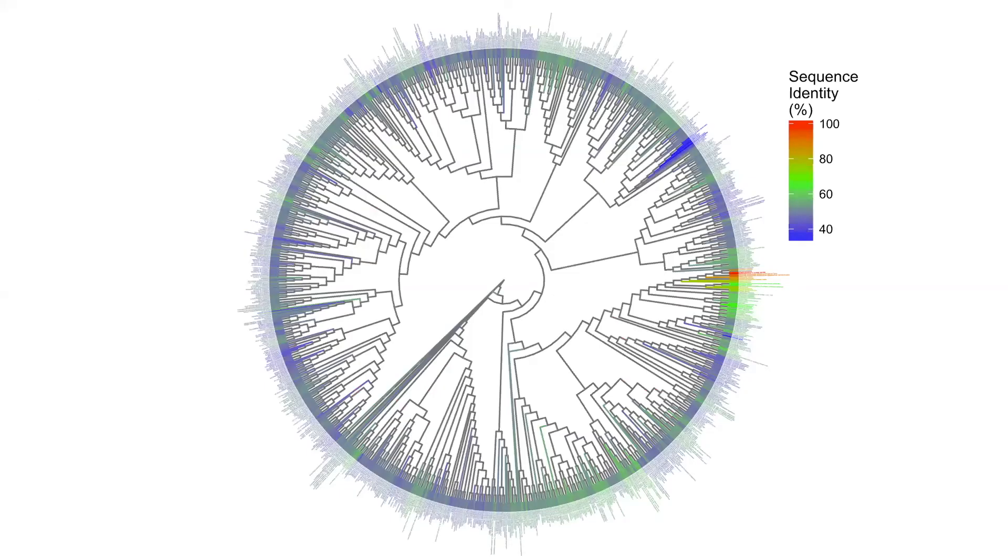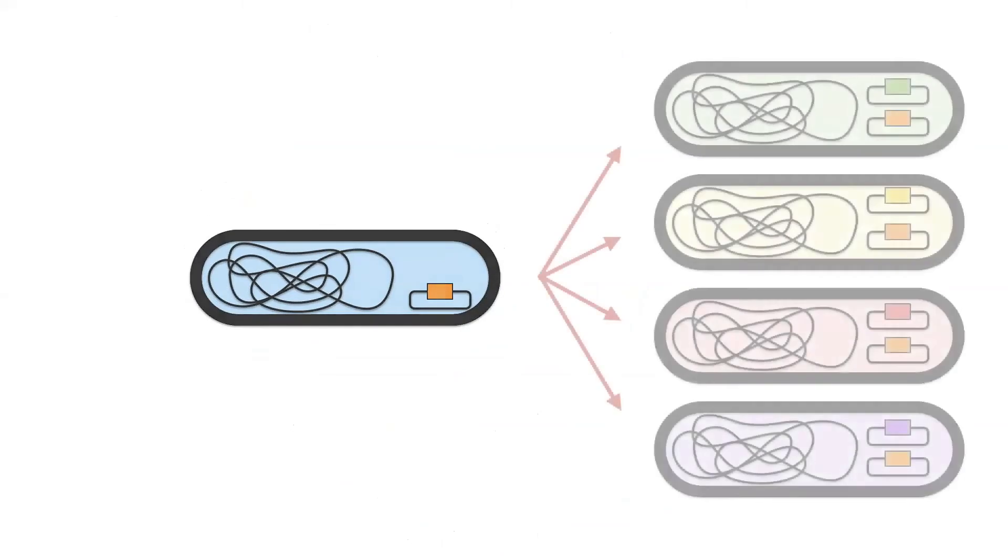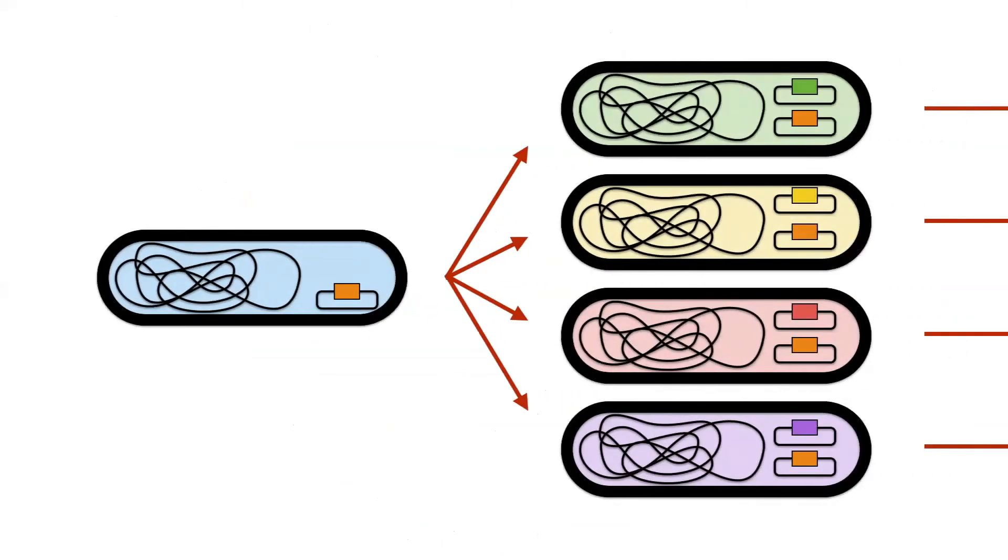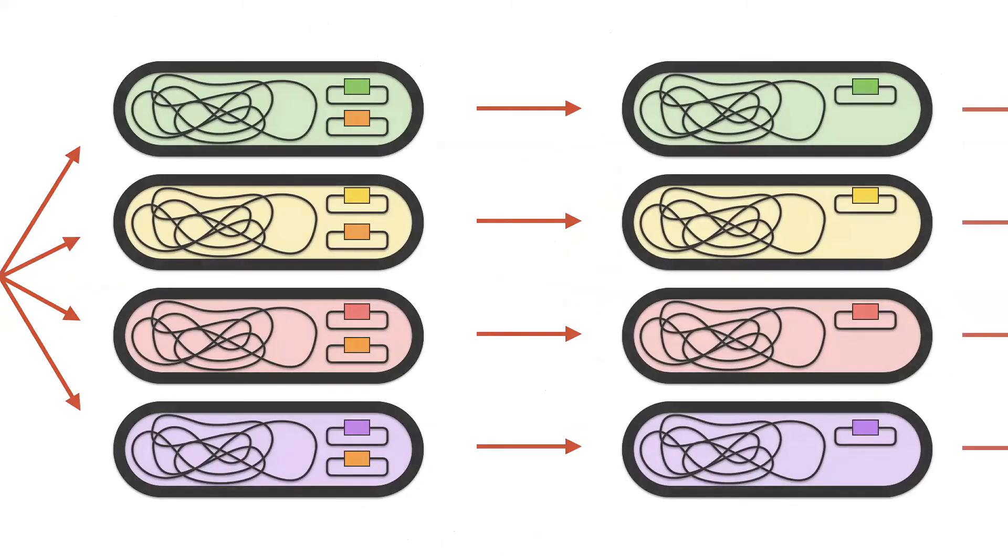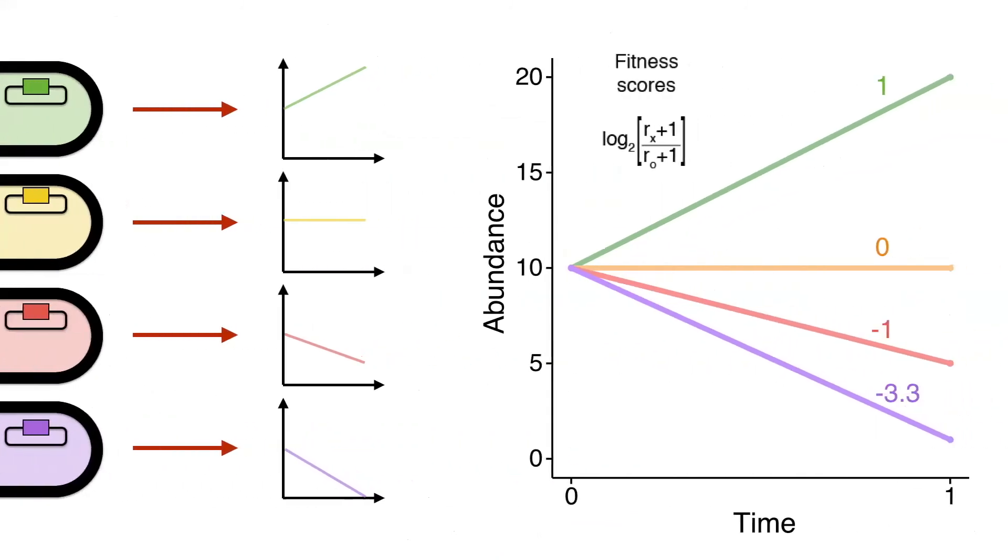And so without going into too much detail, we synthesized 1,200 variants. We made a relatively simple assay where we introduced a native gene onto a curable rescue plasmid. We introduced the library, and then we basically saw when we cured the plasmid, what kind of enrichment and depletion of the barcodes do we get, and calculate some sort of fitness scores.